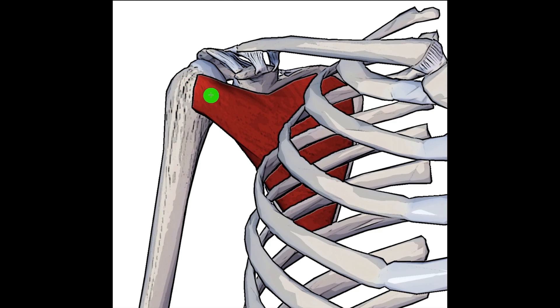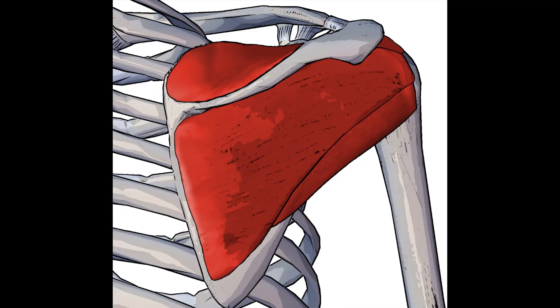The subscapularis muscle forms one of the four rotator cuff muscles of the shoulder. If we take a posterior view, we can see the other three rotator cuff muscles right here: the supraspinatus, the infraspinatus, and the teres minor muscle.